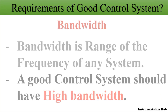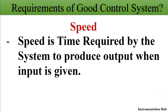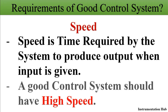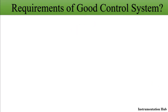The next parameter is speed. Speed is the time required for the system to produce an output when the input is given — in short, how much time the system takes to produce output for a given input. While designing a control system, you should remember that the system should have high speed so it can generate output in very less time.